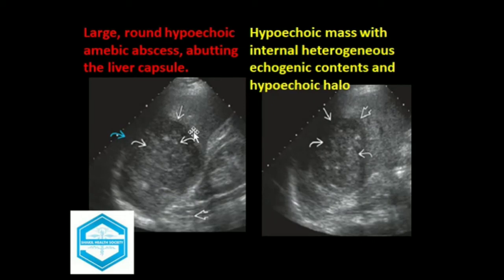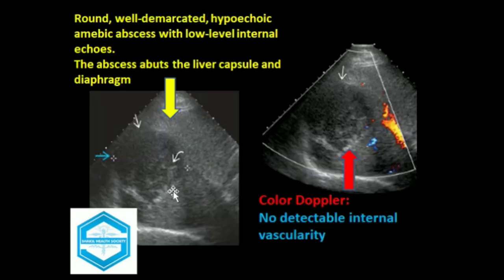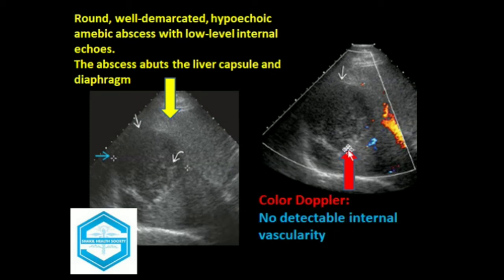This is a large round-shaped hypoechoic amoebic abscess. The mass is hypoechoic with internal heterogeneous echogenic contents and there is a halo surrounding it, demonstrating that a halo may sometimes be present. This is a well-defined demarcated hypoechoic mass with low-level internal echoes; the lesion is abutting the liver capsule and finally the diaphragm, which is characteristic of liver amoebic masses. On color Doppler, once again there is no detectable flow.